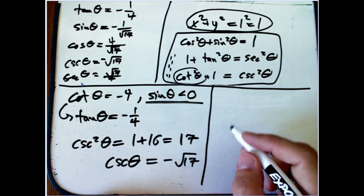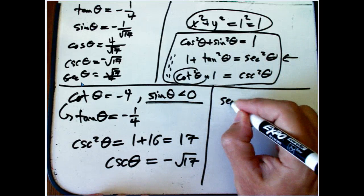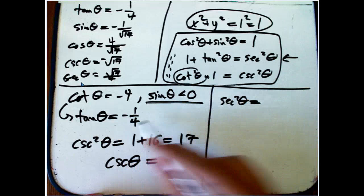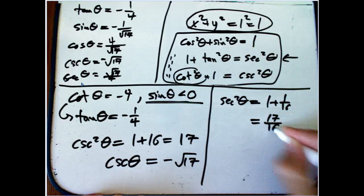Okay. And then we're almost home free. This guy is going to give us secant squared. Secant squared theta. Okay. That's 1 plus 1 sixteenth. Or 17 sixteenths.